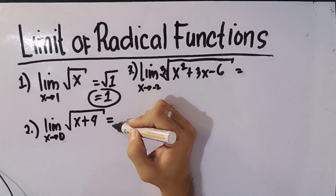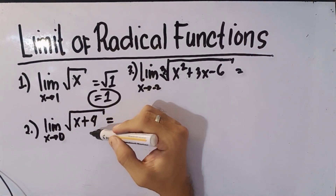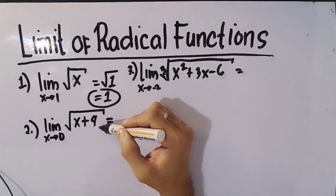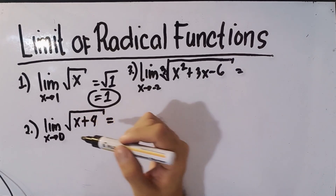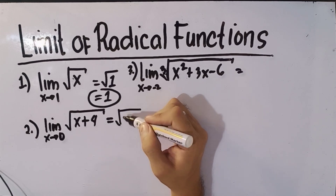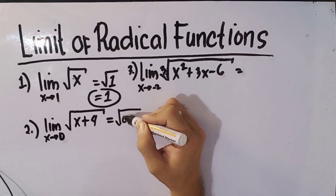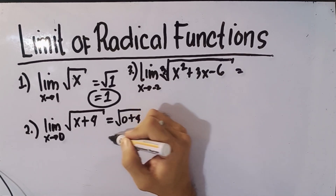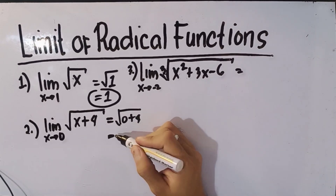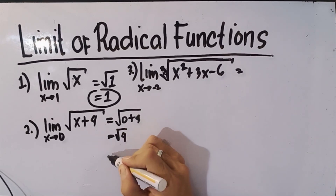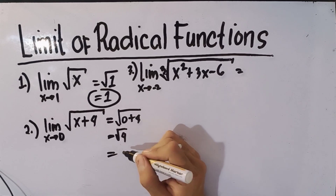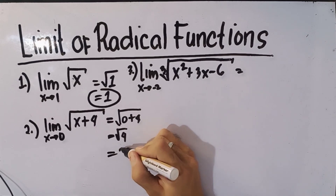The second example: the limit of the square root of (x plus 4) as x approaches 0. Ganun lang din — evaluate natin. That will be the square root of (0 plus 4) = square root of 4. Ano ba square root of 4? That's 2.